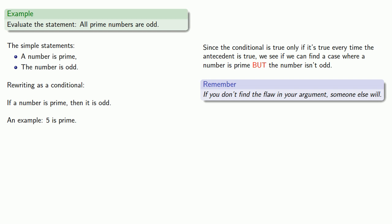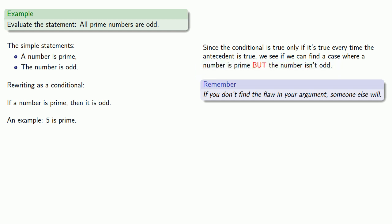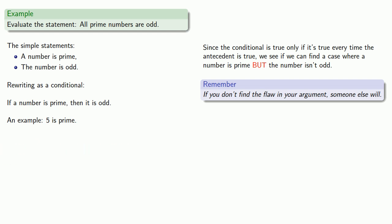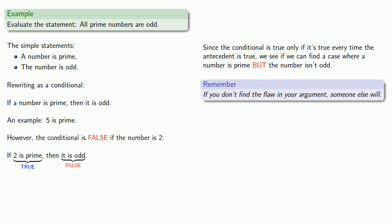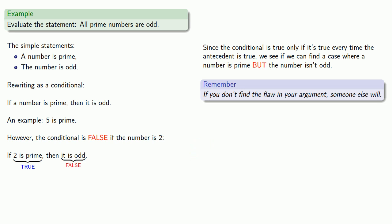We want a number that's prime but not odd, and it's easy enough to see that there is such a number. Consider the statement: if 2 is prime, then it is odd. Here our antecedent is true, but our consequent is false. So the conditional is false when the number is 2, which means our original statement — all prime numbers are odd — is false.